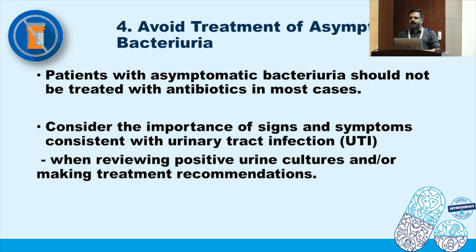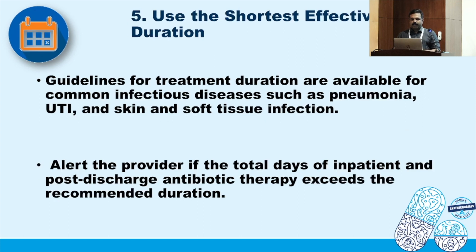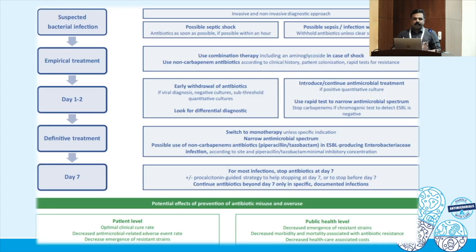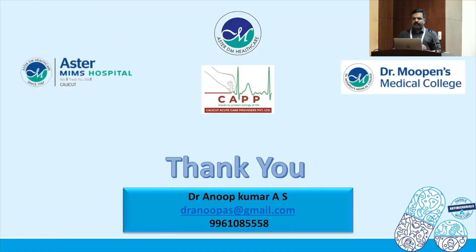Reassess antibiotic therapy regularly. Asymptomatic bacteriuria should not be treated. Use the shortest duration possible — in the majority of situations, five to seven days is enough. When a bacterial infection is suspected, start empiric treatment, continue for one to two days, then based on the culture report or proper diagnosis, modify the antimicrobial agents being used. Thank you.